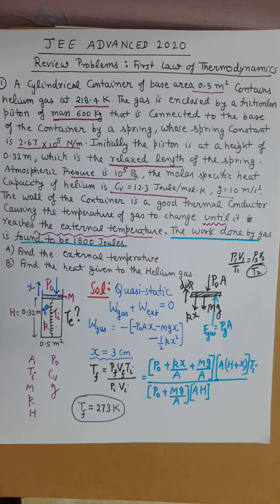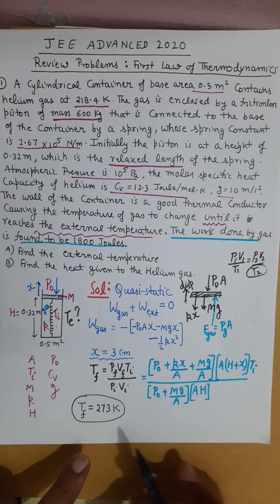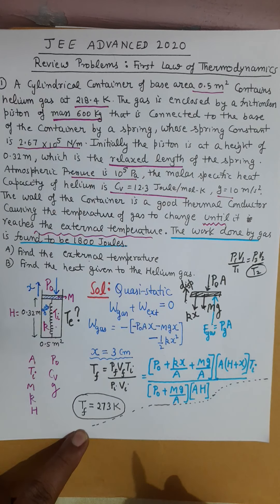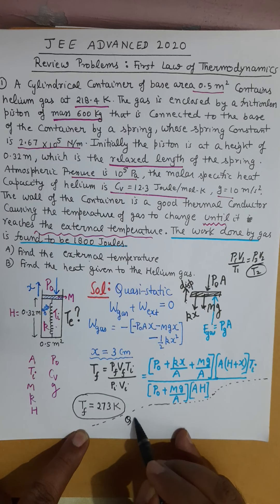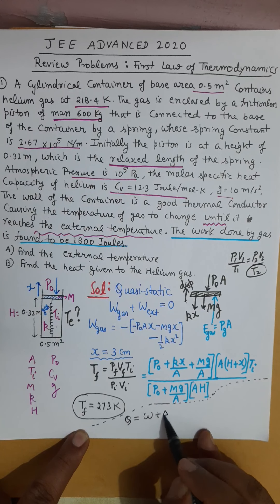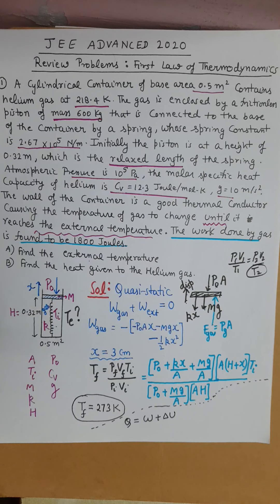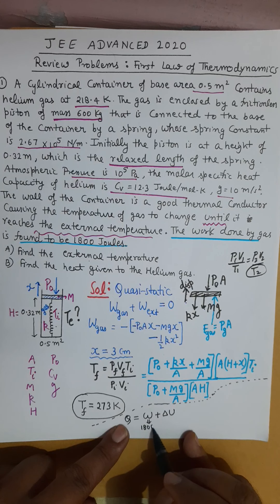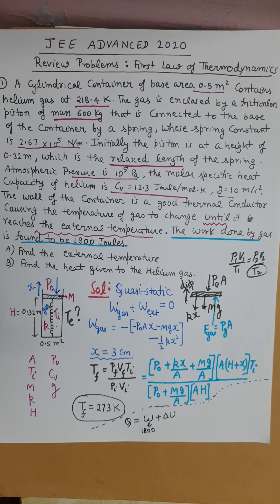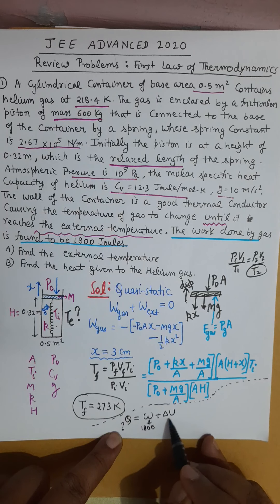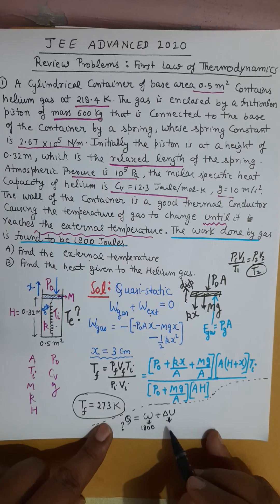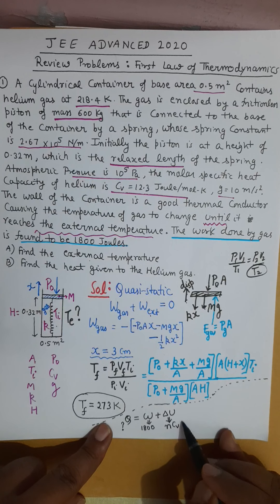Now for Part B — heat given to the helium gas. By the first law of thermodynamics, Q = W_gas + ΔU. Work done by gas is given as 1800 J. So the focus is on calculating ΔU. For any thermodynamic process, ΔU = n·Cv·ΔT.